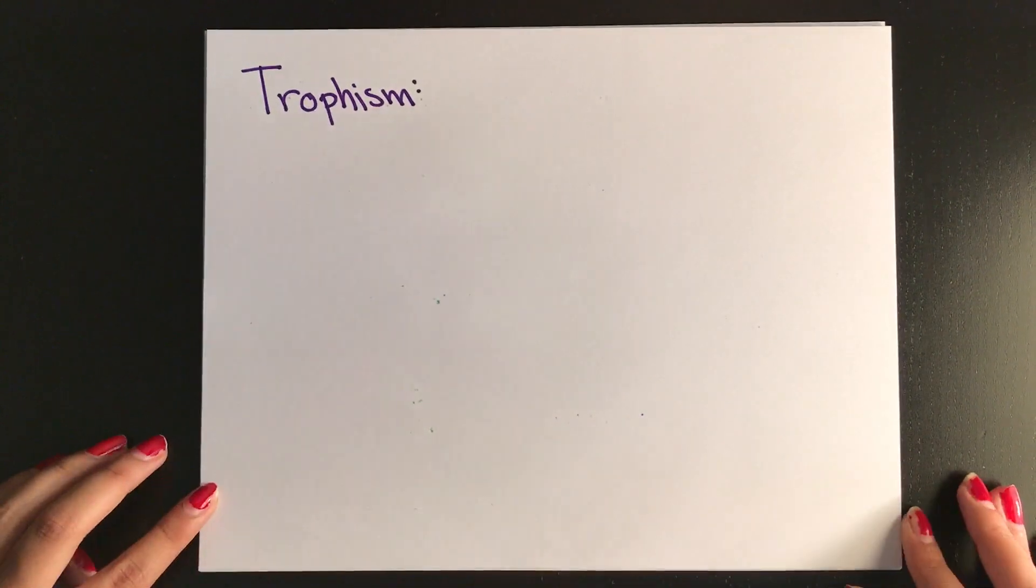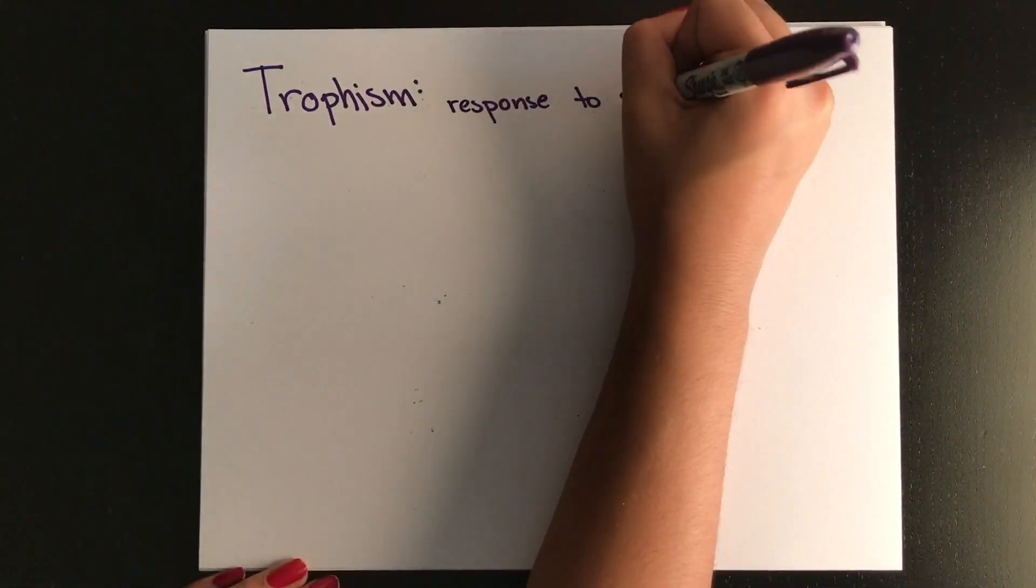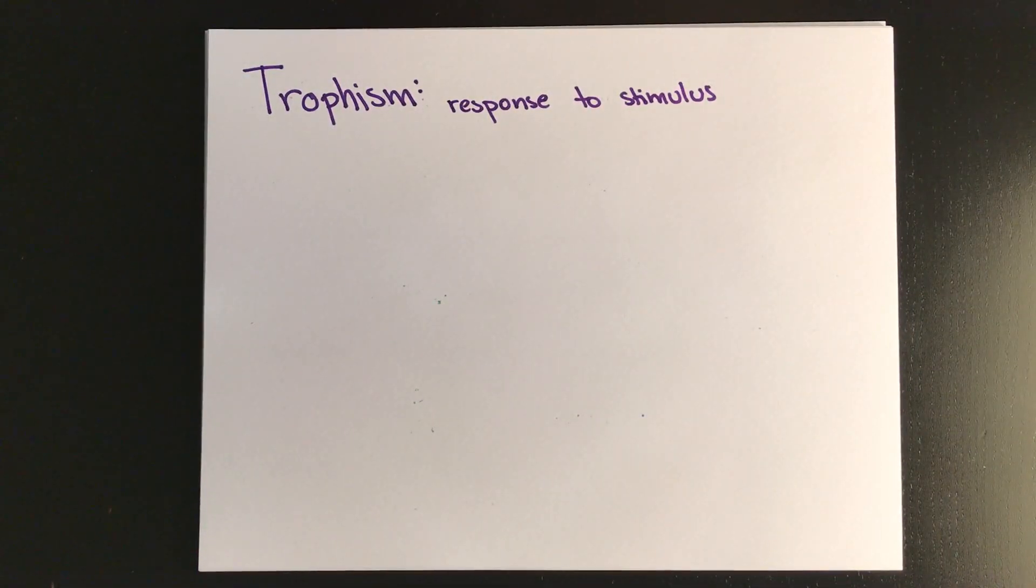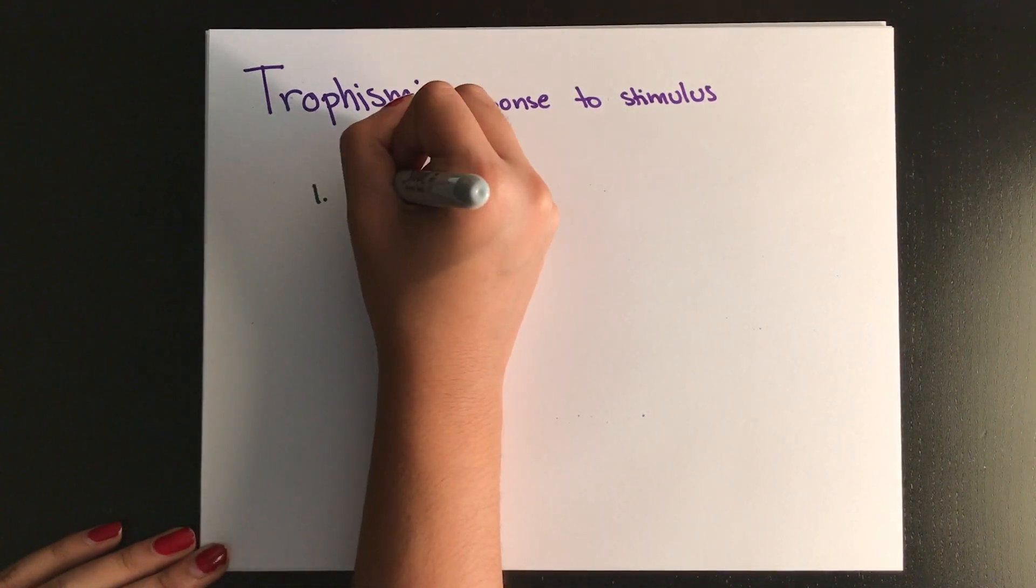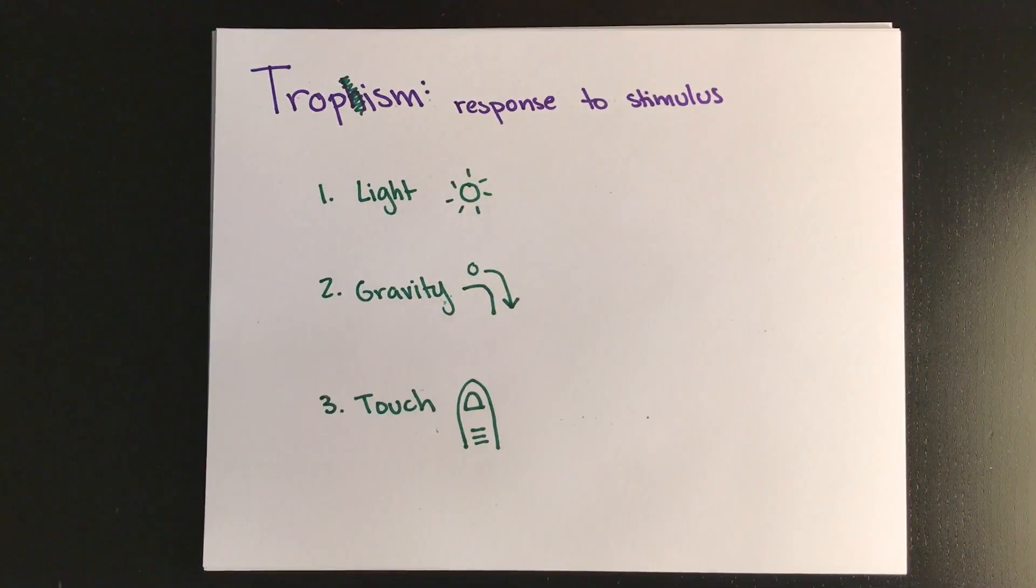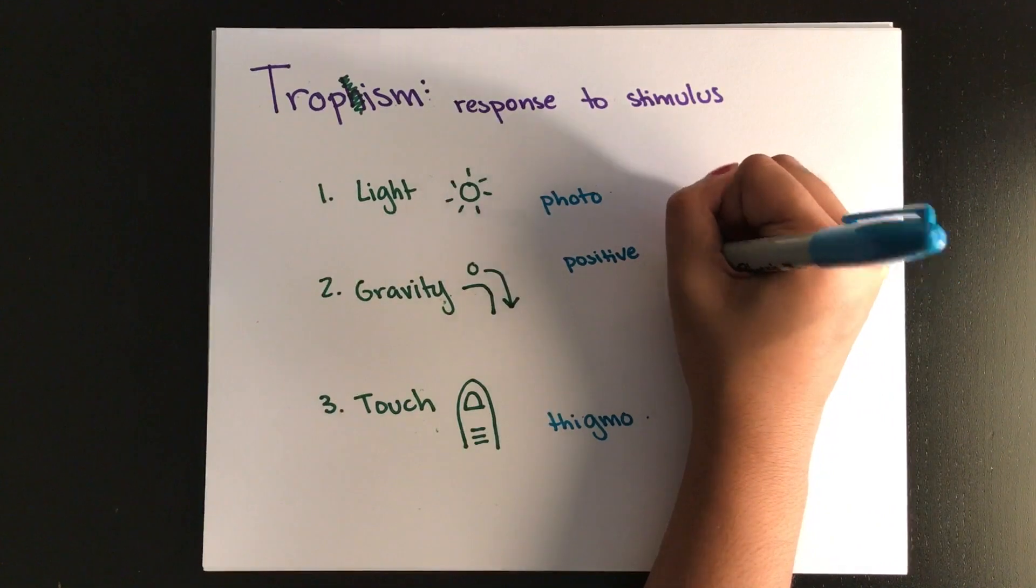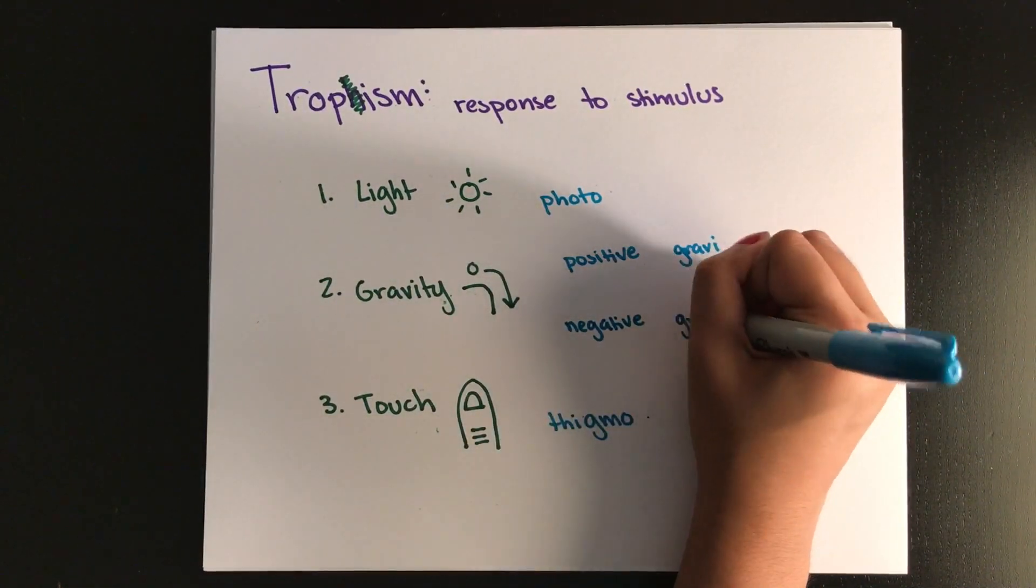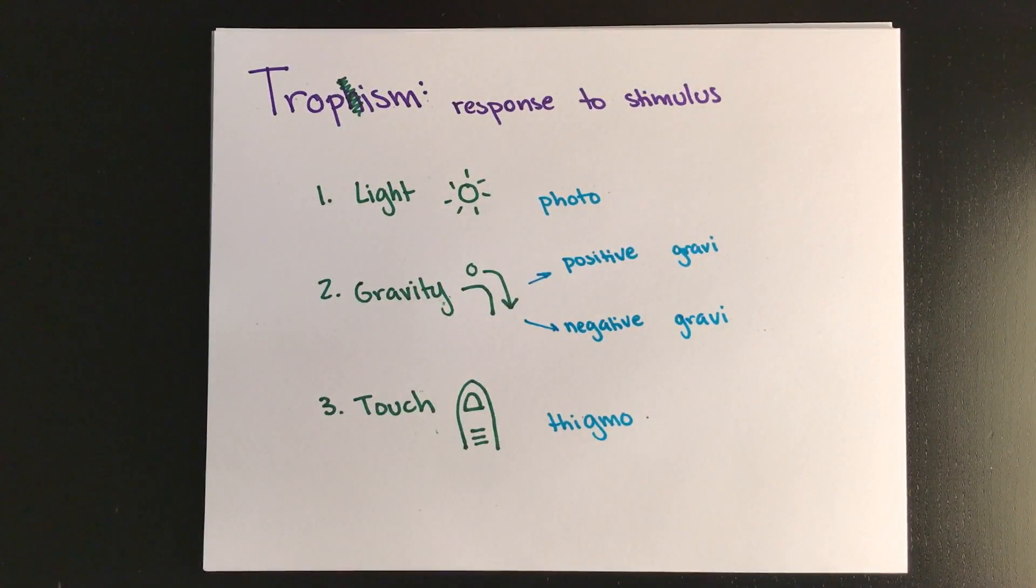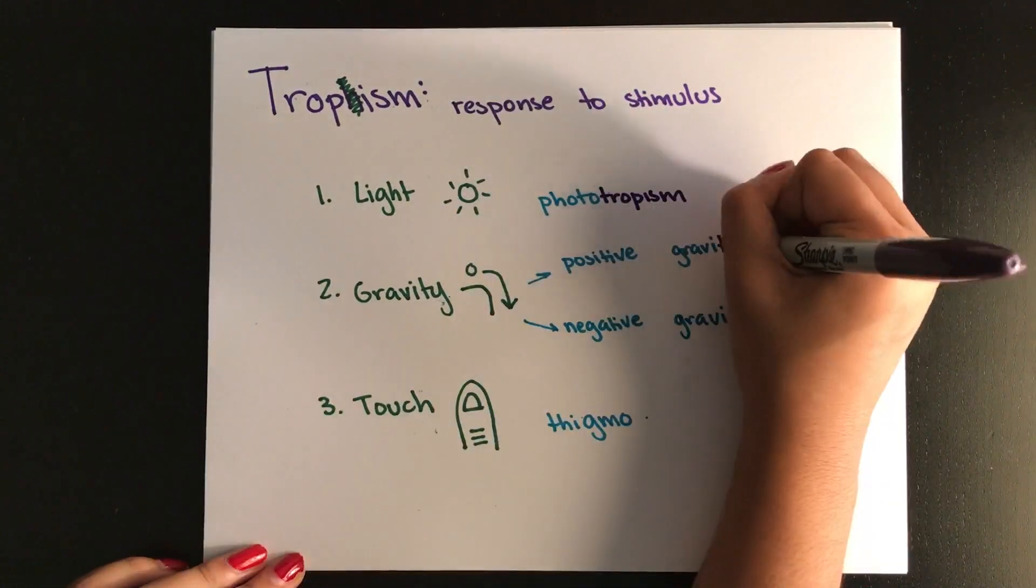Next, we're going to talk about tropism, which refers to a response to a particular stimulus. We're going to talk about this mostly in plants. The three stimuli that cause turning, or the tropism, are light, gravity, and touch. When a plant bends toward the light, it's called phototropism, because photo means light.